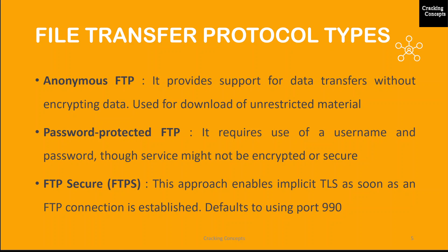Now let us look into the different types of FTP. First is Anonymous FTP, the most basic form. It provides support for data transfers without encrypting data or using a username and password, and is most commonly used for downloading material allowed for unrestricted distribution. Next is Password Protected FTP, which is also a basic FTP service but requires a username and password, though it may not be encrypted or secure. It works on port number 21.